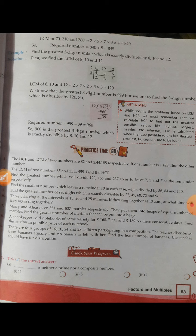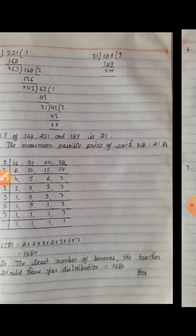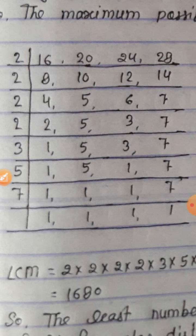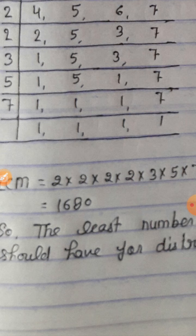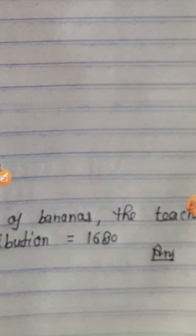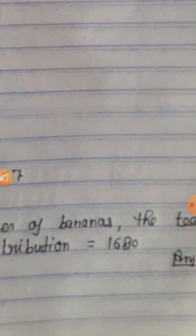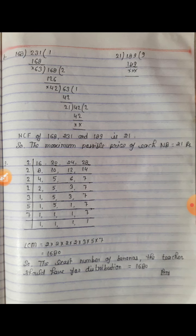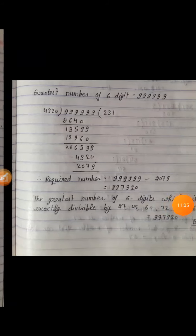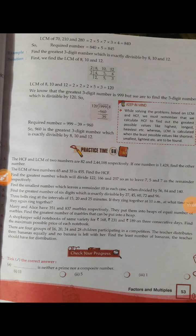Question number 9: There are four groups of 16, 20, 24, and 28 children in a competition. The teacher distributes bananas equally with none left. Find the least number of bananas the teacher should have. Least/smallest के लिए LCM निकालते हैं। LCM of 16, 20, 24, 28 = 1680. The least number of bananas is 1680. Exercise 6H complete हो गई — हर question को solve करिएगा, कहीं भी problem हो तो पूछेगा। Thank you.